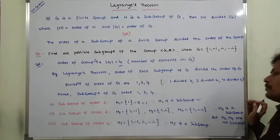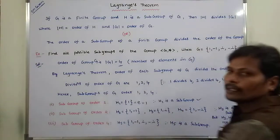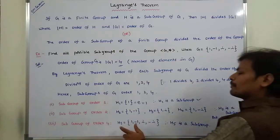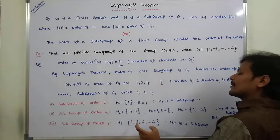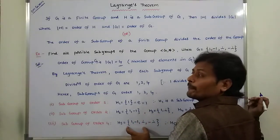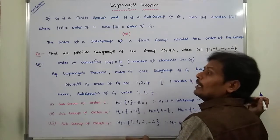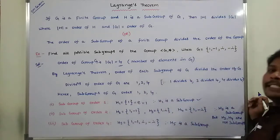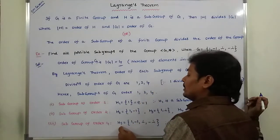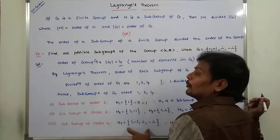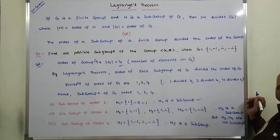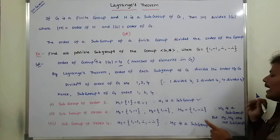Next, subgroup of order 4. Order of G is 4 and order of the subgroup is also 4 — it contains all the elements of G. It is also a subgroup. It satisfies the 4 properties: closure, associative, identity, and inverse property. So H5 satisfies all 4 properties and we can say it is a group — it is a subgroup. Therefore, H5 is a subgroup.